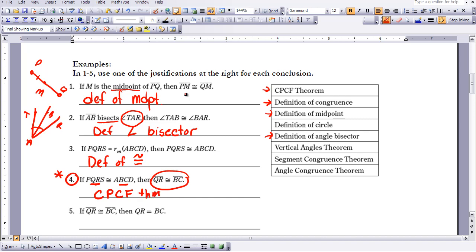The last one. If QR is congruent to BC, then we can say that the distance from Q to R is equal to the distance from B to C. We spent a lot of time in Lesson 2 talking about that. If we're talking about segment congruence here, we have a segment congruence theorem that supports that. We know we can say they're congruent or they're equal. So this is segment congruence theorem.